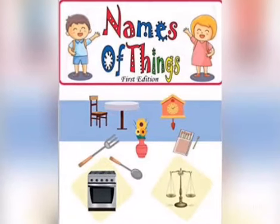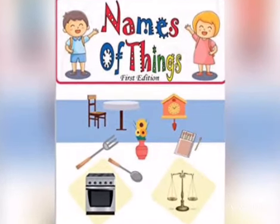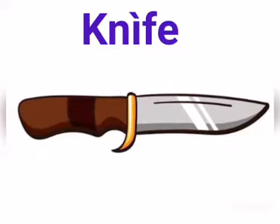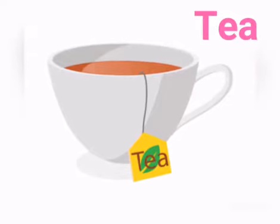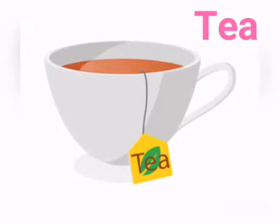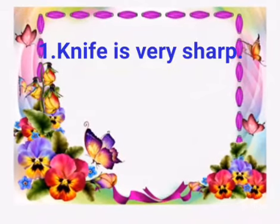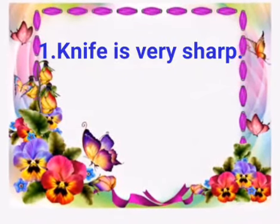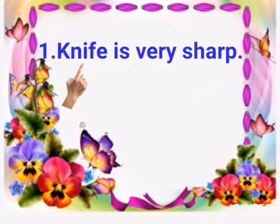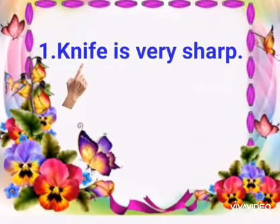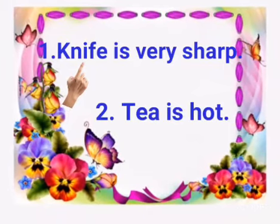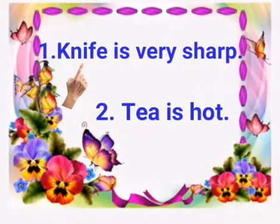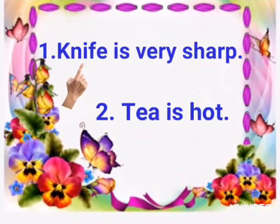Now, the third category is names of things like radio, knife, tea, etc. Let's understand this with an example: Knife is very sharp. So, here, Noun is knife because knife is a thing. Now, come to the second: Tea is hot. So, here, Noun is tea.